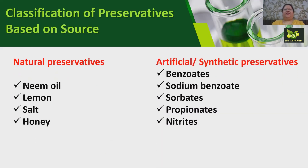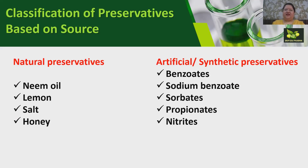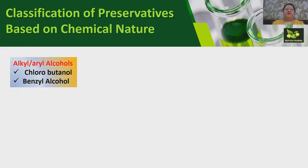Classification based on source: preservatives can be natural or artificial/synthetic. Natural preservatives are also known as traditional preservatives because they were traditionally used — examples include neem oil, lemon, salt, and honey. Artificial or synthetic preservatives include benzoates, sorbates, propionates, nitrates, and all the other examples previously discussed.